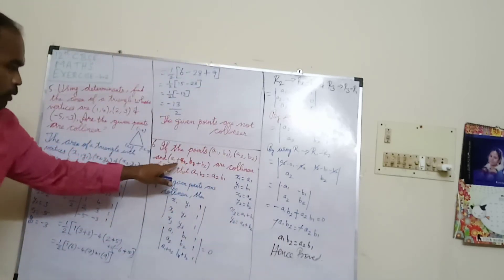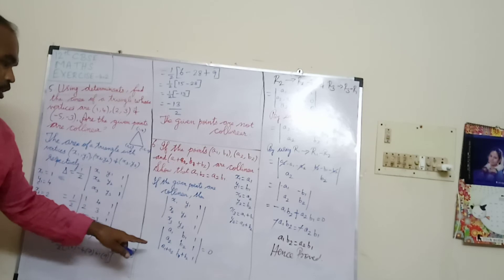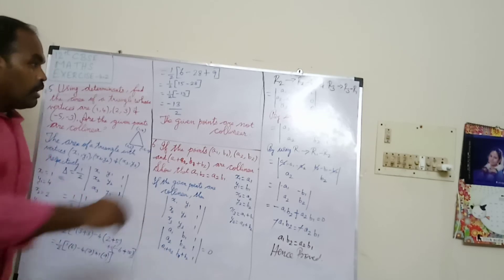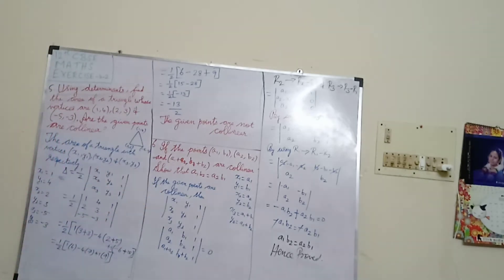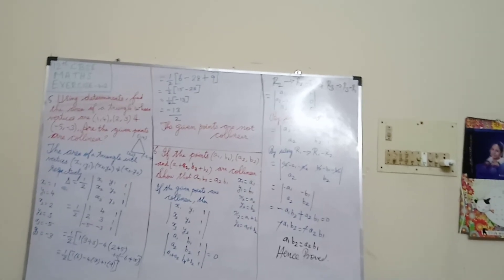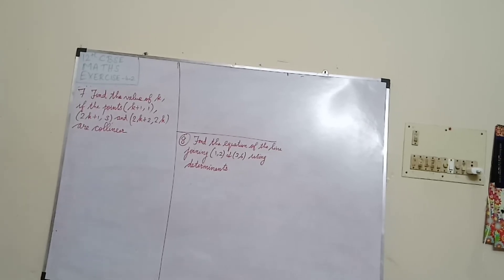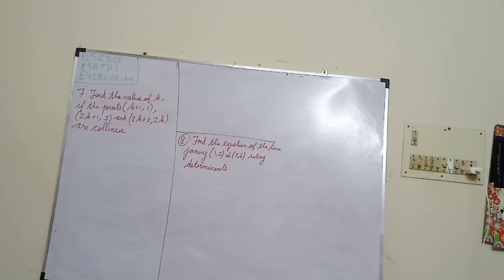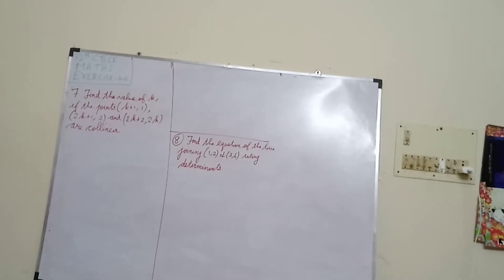Sorry, a small correction: the third point is (a1+a2, b1+b2), which is what we used in the calculation. Next problem: Find the value of k if the points (k+1, 1), (2k+1, 3), and (2k+2, 2k) are collinear.